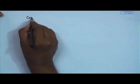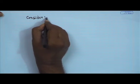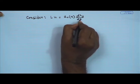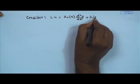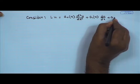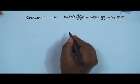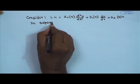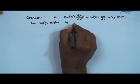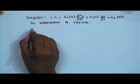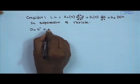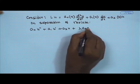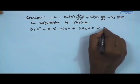Let us consider the general operator L as Lu = a₀(x) d²u/dx² + a₁(x) du/dx + a₂(x)u. On separation of variables, we may get a relationship: a₀u'' + a₁u' + a₂u + λa₃u = 0, where λ is a constant.